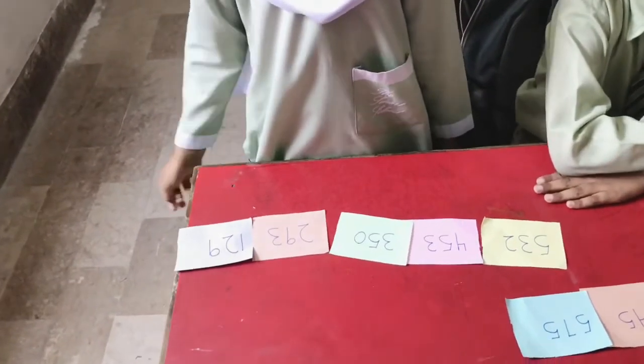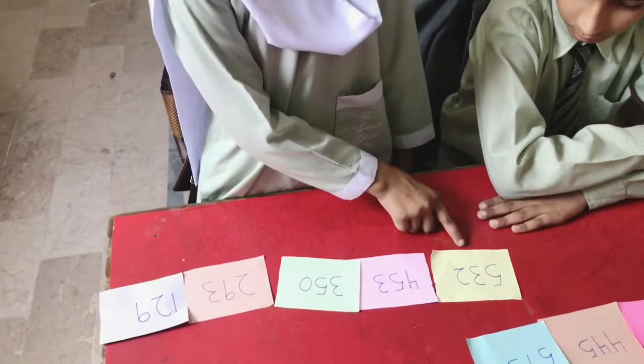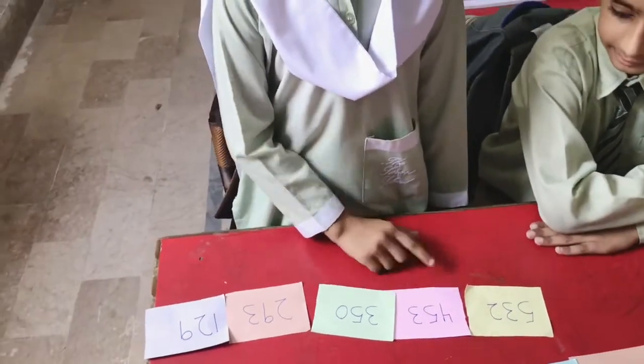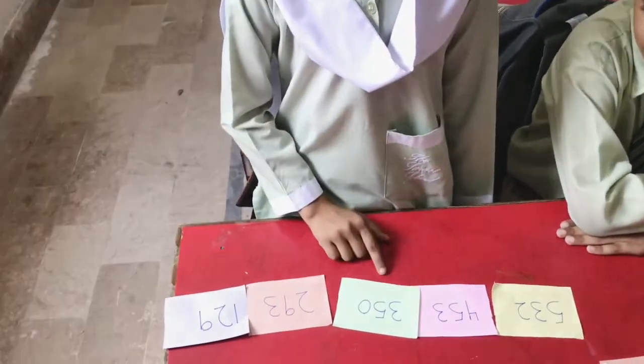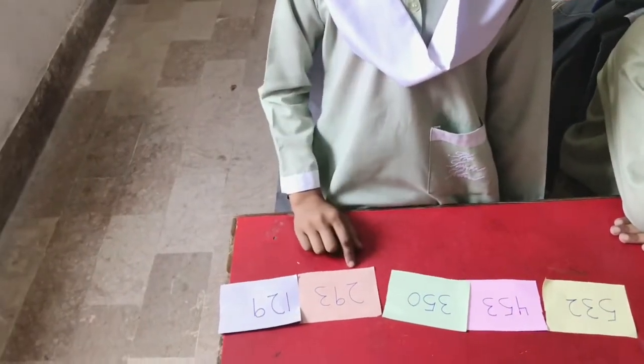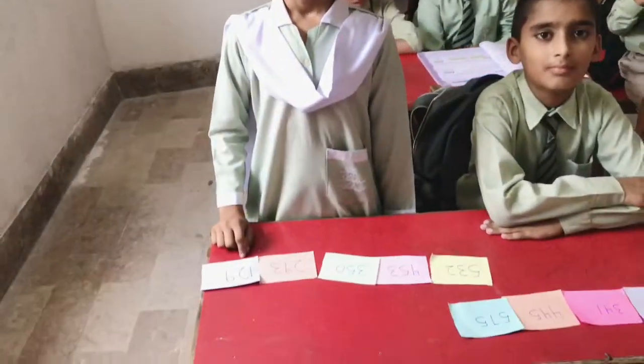Read these numbers. Five hundred and eighty-two, four hundred and eighty-three, three hundred and eighty-three, two hundred and eighty-three, one hundred and eighty-three. Very good.